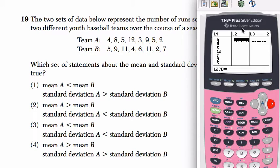Second one, 5, 9, 11, 4, 6, 2, and 7. Okay, so 1, 2, 3, 4, 5, 6, 7, 8.